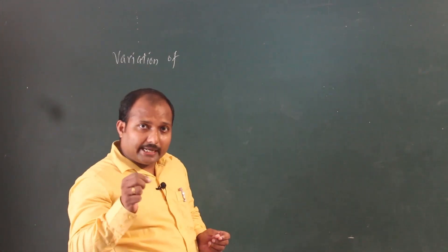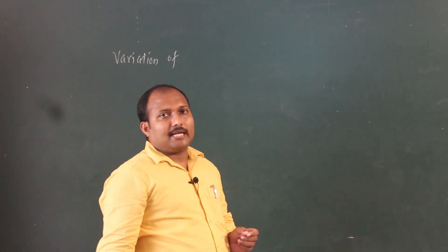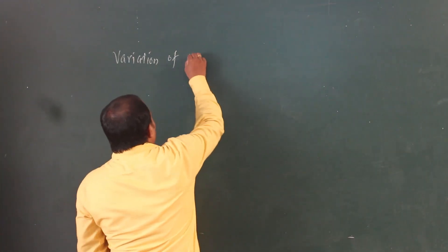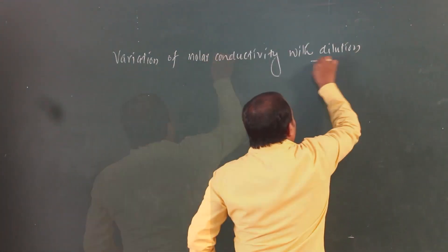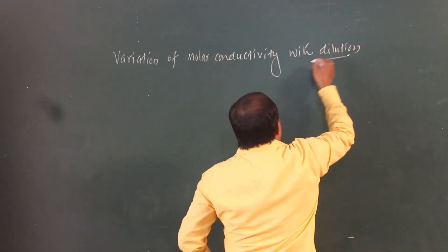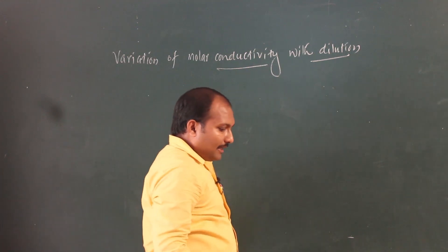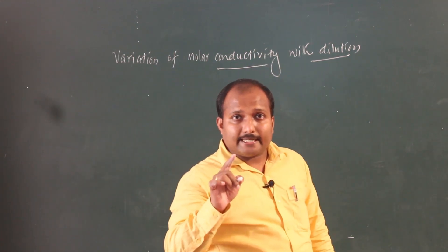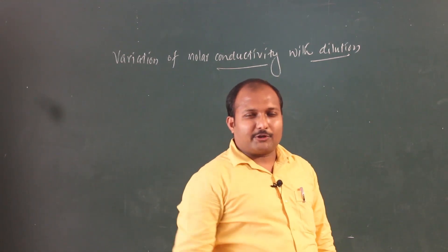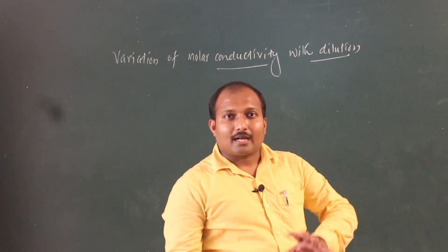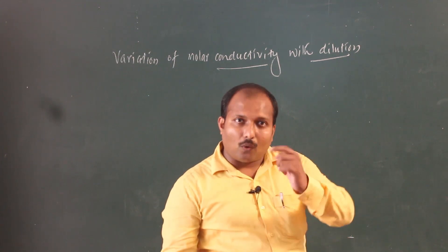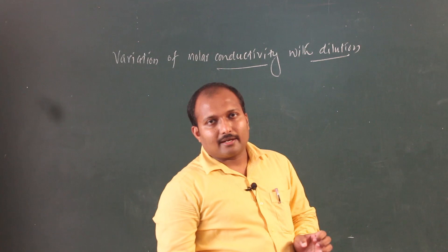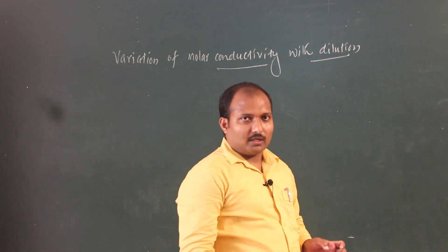That is the variation of conductivity with dilution. Now for the variation of molar conductivity with dilution: conductivity is the conductance of ions present in one centimeter cube, whereas molar conductivity is the conductance of all the ions produced by one mole of the electrolyte in solution.